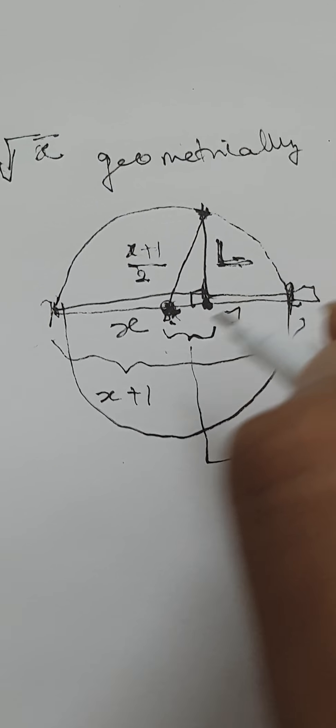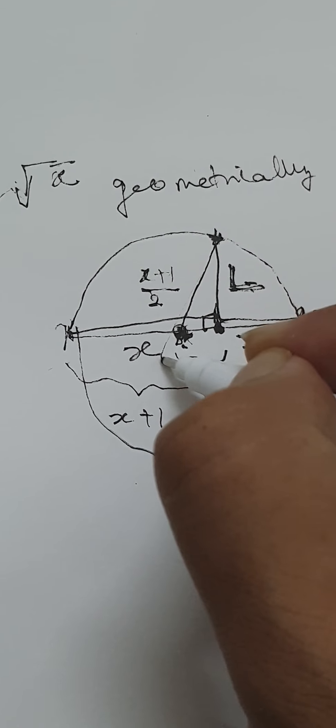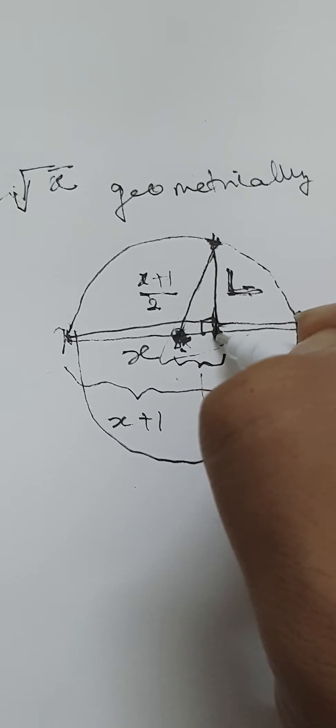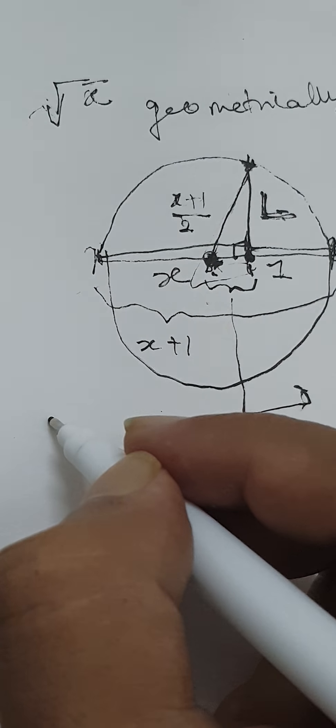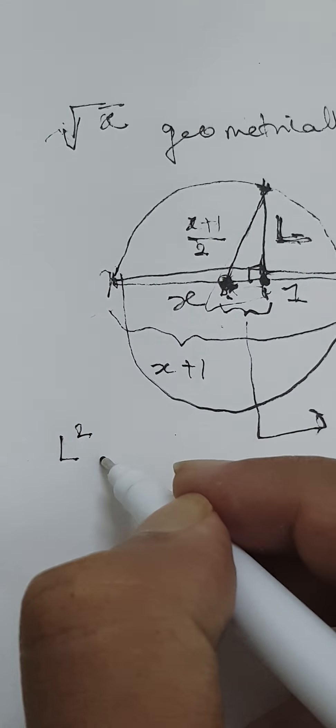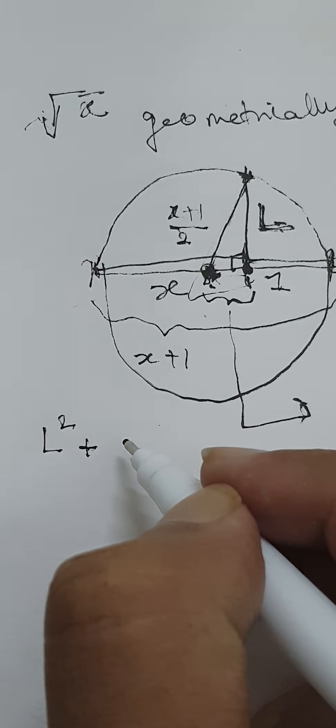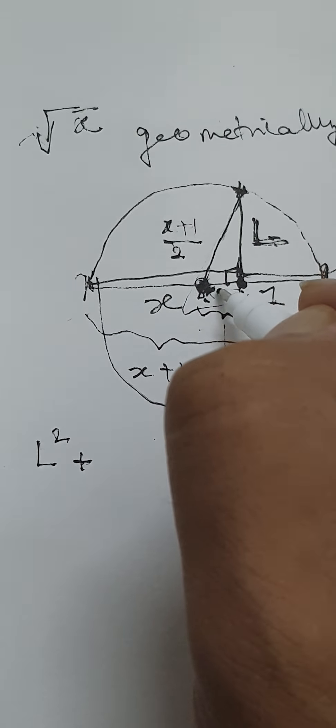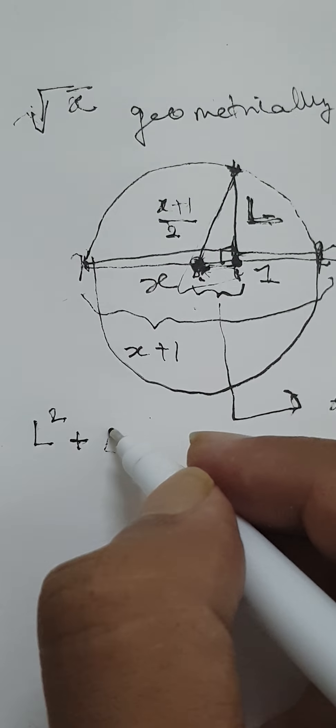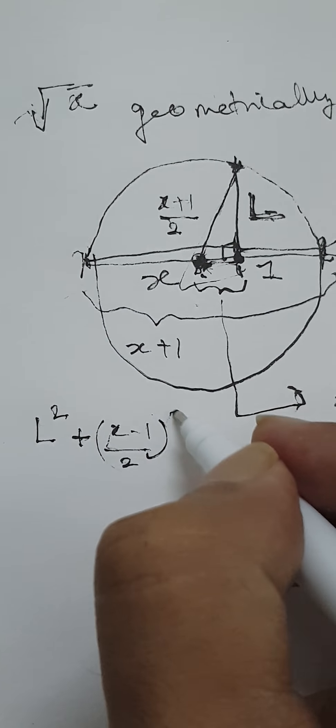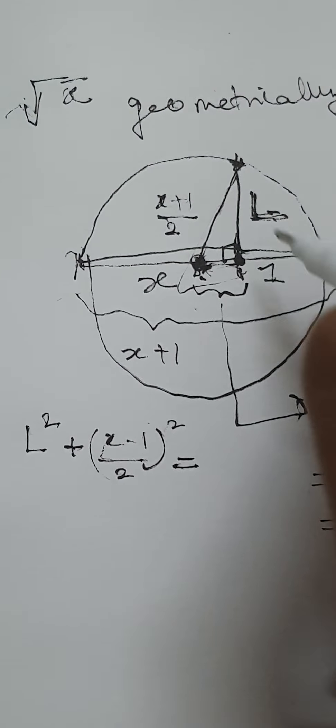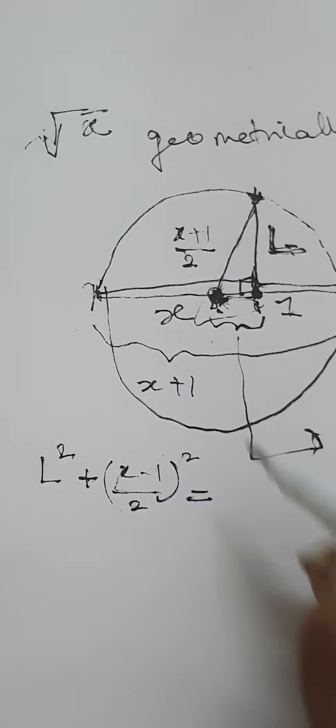Now, this is a right-angled triangle. And l squared plus this side, which is x minus 1 by 2 squared, is equal to the hypotenuse, which is the radius in this case.